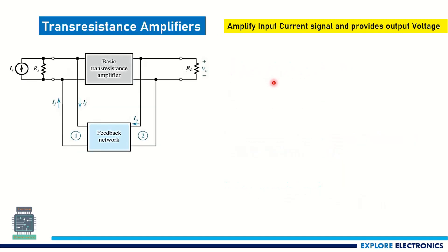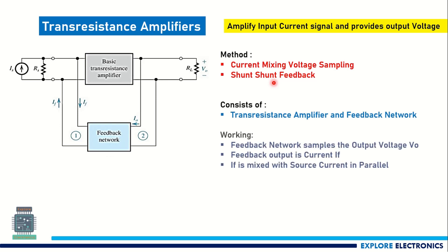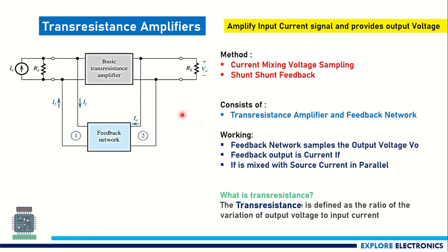Similarly, we have the transresistance amplifier, obtained by shunt-shunt feedback. In shunt-shunt feedback, while sampling we take the signal in parallel, meaning we take voltage into consideration while sampling, and we mix it with a current quantity at the input side. The output of the feedback network is also a current. Transresistance is the ratio of variation in output voltage with respect to the input current applied.